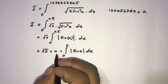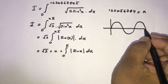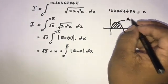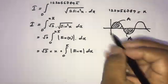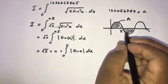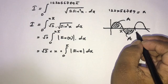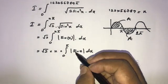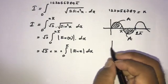Let's go to the graph of sine of x. We know this is the graph of sine of x. If we take this area as A, we know also this area is equal to A. If we take the integral from 0 to 2 times 5 of sine of x, we know this area is equal to 0. But now we need the absolute value of sine of x, so let's look at the absolute value of sine of x graph.